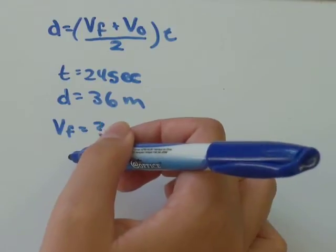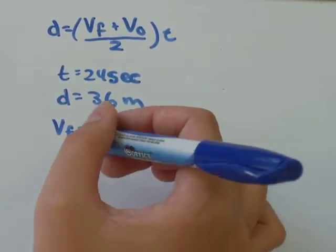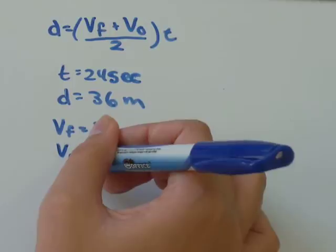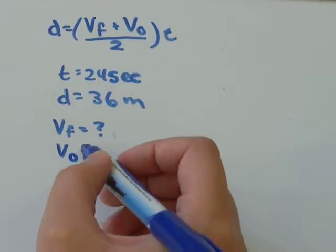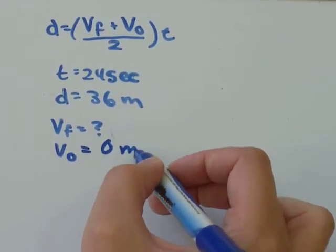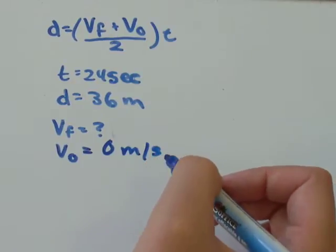So from rest means from an initial speed of 0 meters per second. So our original velocity, V0, is going to be 0 meters per second and it was north.